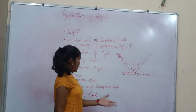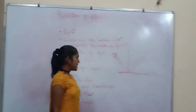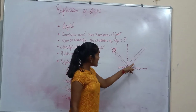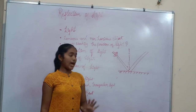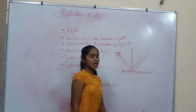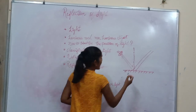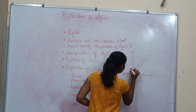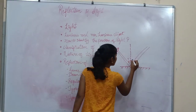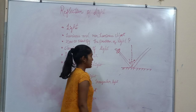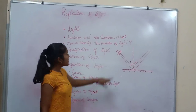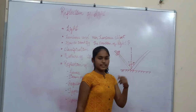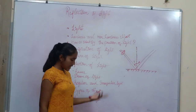Now we will see the laws. First law says that the reflected surface, the incident ray, is always lying on the plane surface. Now next — the angle formed. This is the angle of incidence and this one is the angle of reflectance. So the second law says that the angle of incident ray is equal to the angle of reflectance ray.